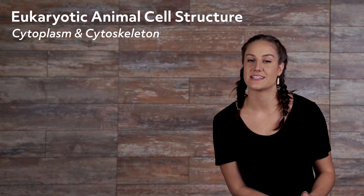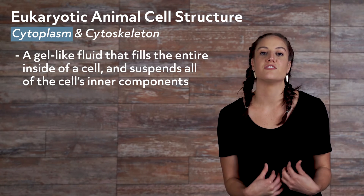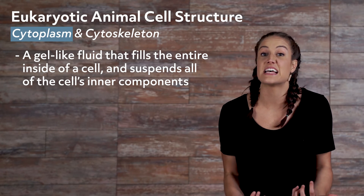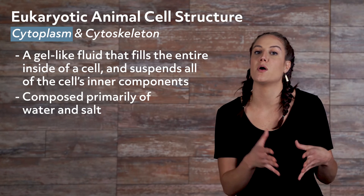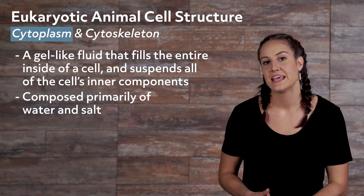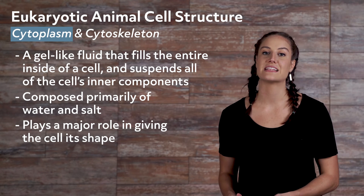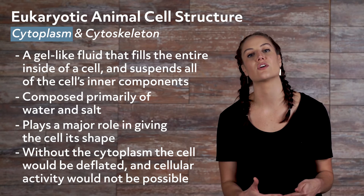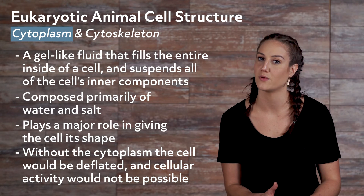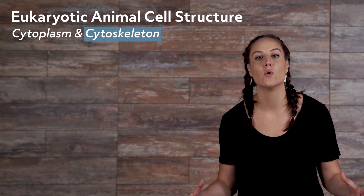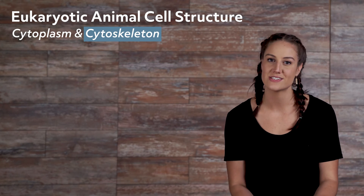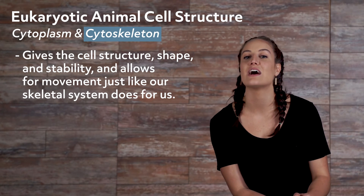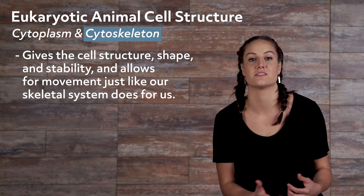Cytoplasm and Cytoskeleton. Cytoplasm is a gel-like fluid that fills the entire inside of a cell and suspends all of the cell's inner components. It is composed primarily of water and salt and plays a major role in giving the cell its shape. Without the cytoplasm, the cell would be deflated and cellular activity would not be possible. The cytoskeleton gives the cell structure, shape, stability, and allows for movement, just like our skeletal system does for us.